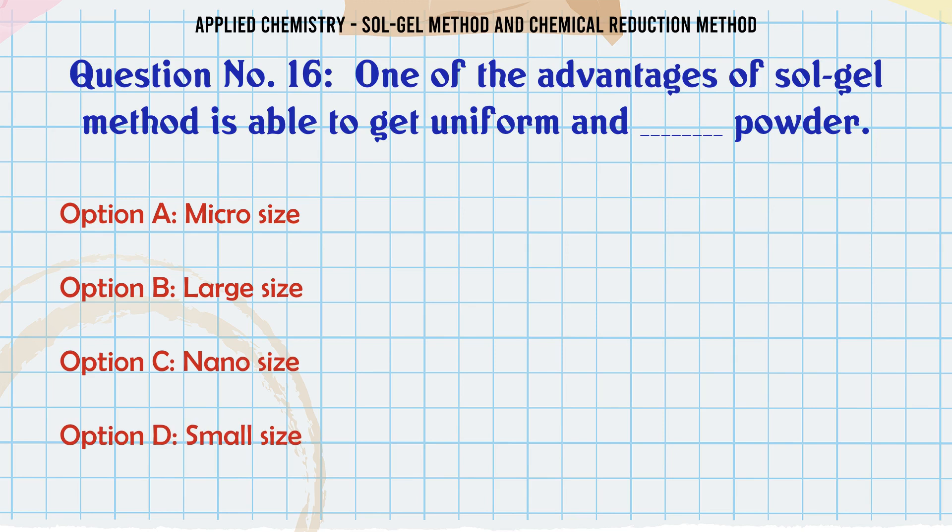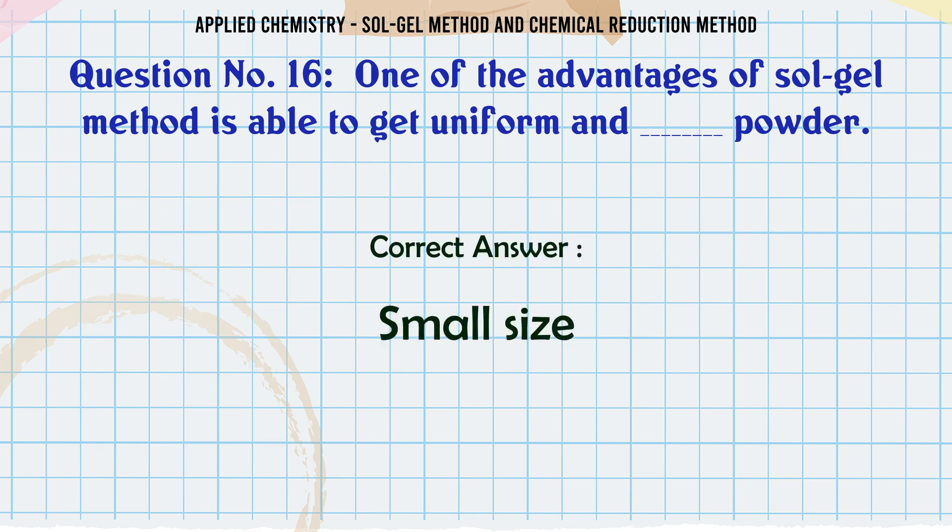One of the advantages of the sol-gel method is the ability to get uniform and which size powder? A. Micro size, B. Large size, C. Nano size, D. Small size. The correct answer is Small size.